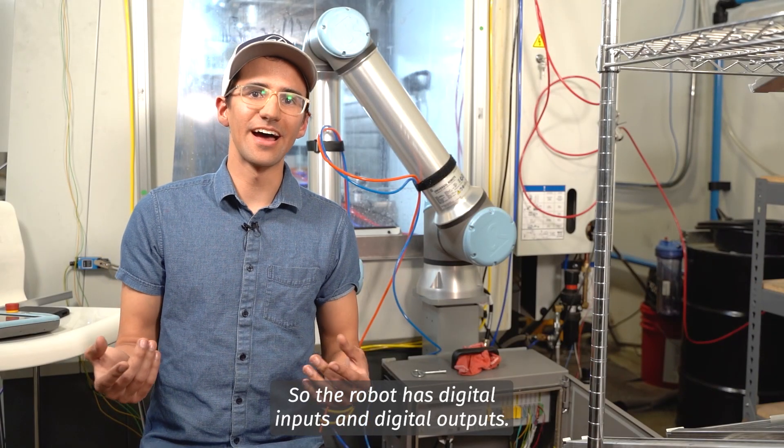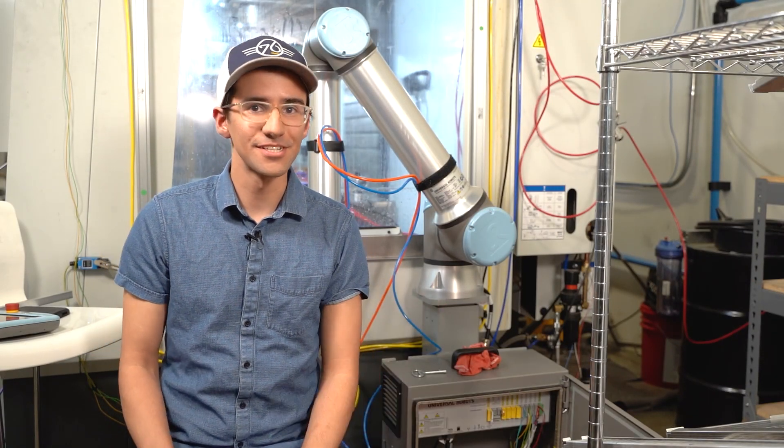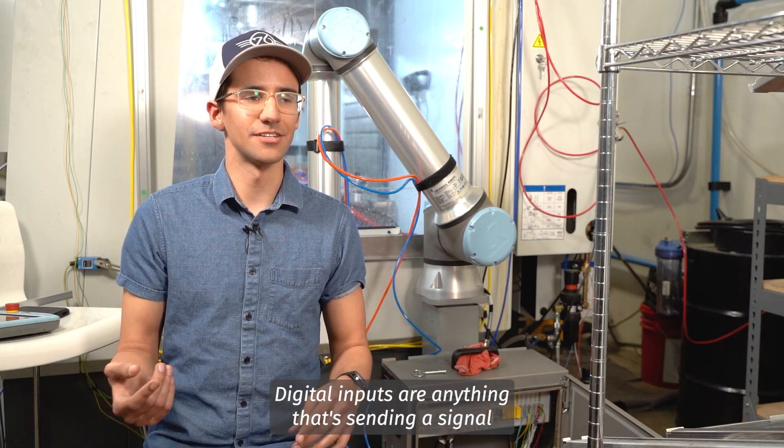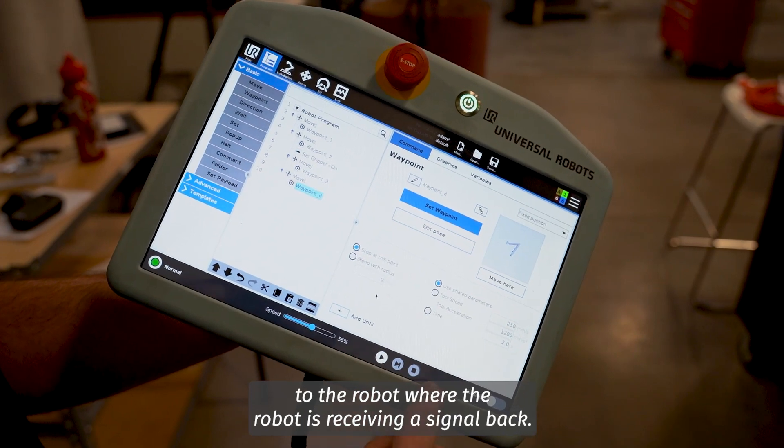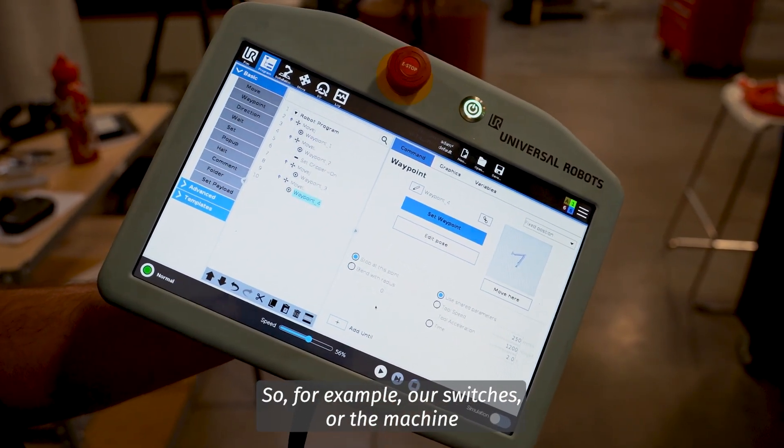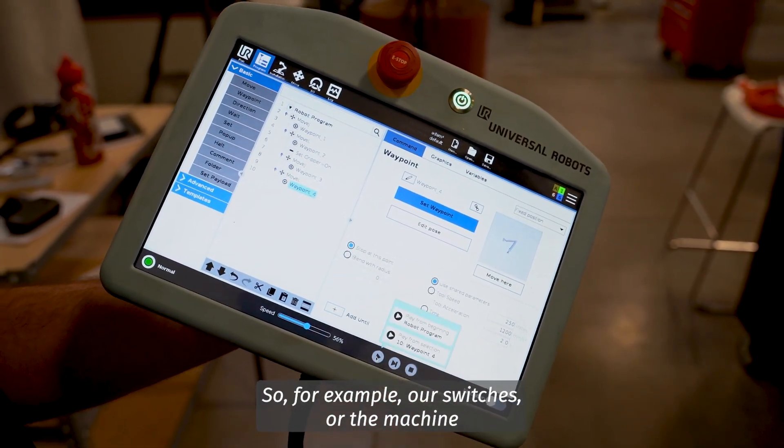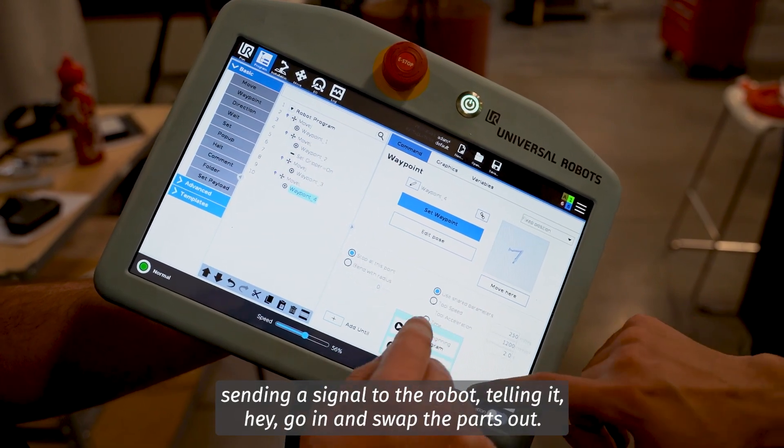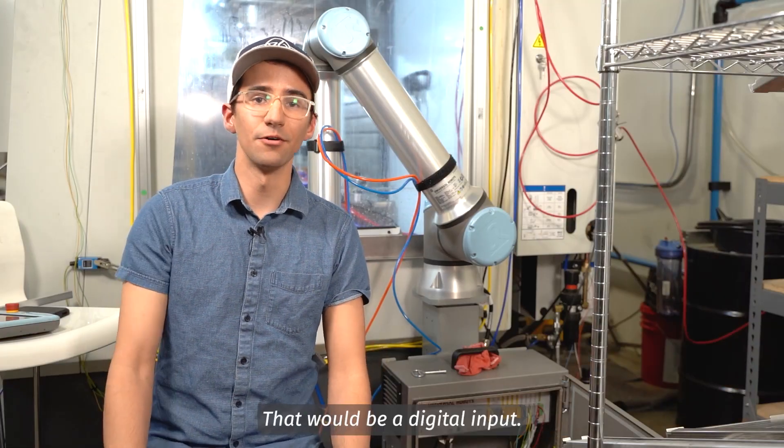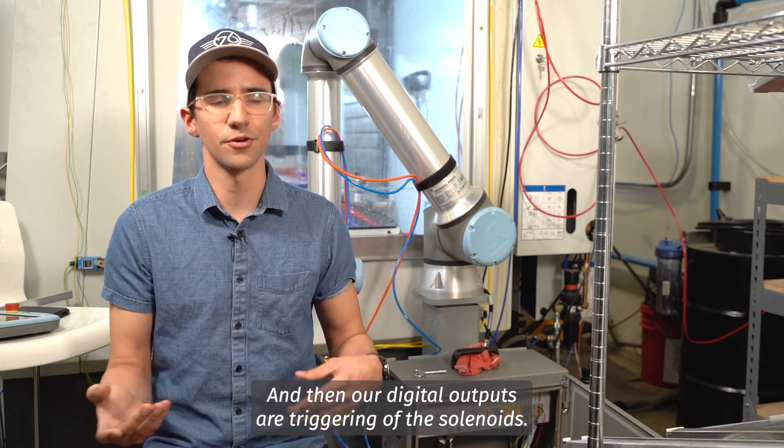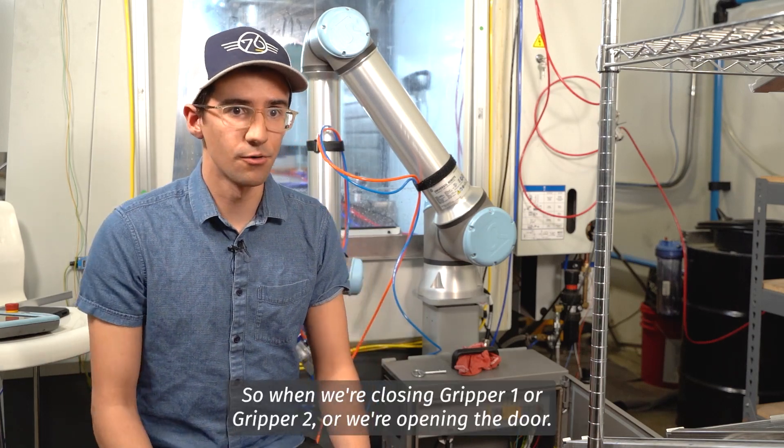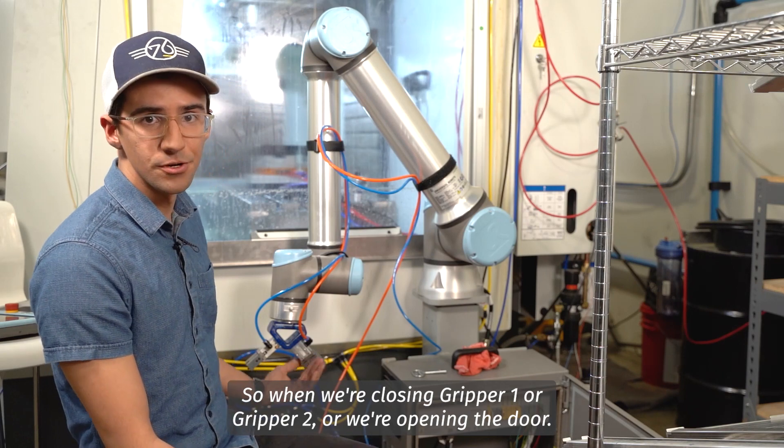So the robot has digital inputs and digital outputs. Digital inputs are anything that's sending a signal to the robot where the robot is receiving a signal back. So for example, our switches or the machine sending a signal to the robot telling it, hey, go in and swap the parts out, that would be a digital input. And then our digital outputs are triggering of the solenoids, so when we're closing gripper one or gripper two, or we're opening the door, that's all going to be a digital output.